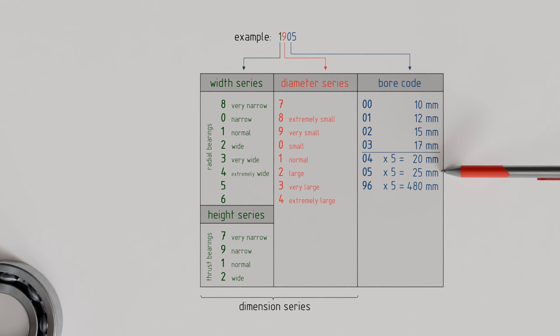Deviating bore diameters, that is, bore diameters smaller than 10 mm or larger than 480 mm, as well as those that cannot be represented in 5 mm increments, are indicated in the designation separated by a slash.